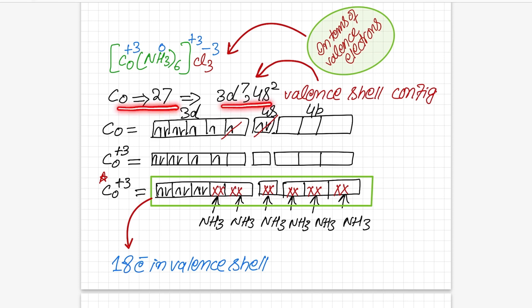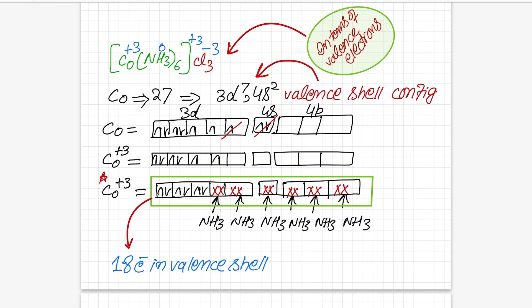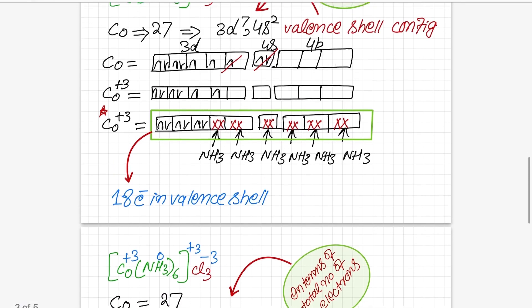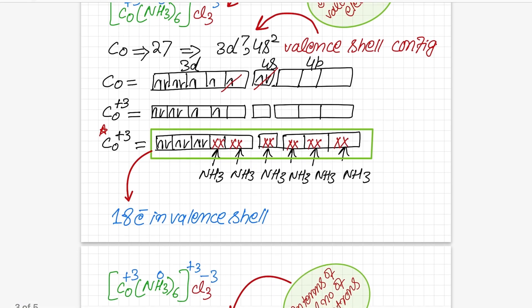Cobalt's atomic number is 27, and this is its valence shell configuration. Writing it in orbital form: 3d⁷ and 4s² for neutral cobalt. But in the complex, cobalt is in +3 form, so we convert cobalt to Co³⁺ by removing the two 4s electrons and one 3d electron. Now cobalt is in +3 form. Next, as we did excitation for carbon earlier, here we pair up the electrons in cobalt's d orbitals because ammonia is a strong field ligand and causes electron pairing.